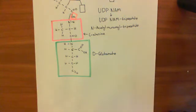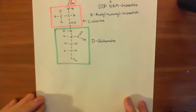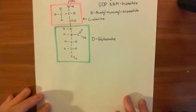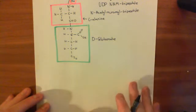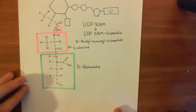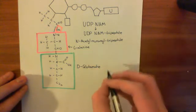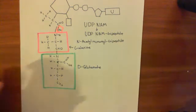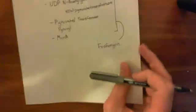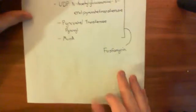The third amino acid we link on depends on the bacterial species. We'll start with what happens in E. coli — here, you link to a molecule known as diaminopimelic acid, often denoted DAP. This is an amino acid you may not have encountered before because it's not used in protein synthesis; it's non-proteinogenic. Let me show you its structure.